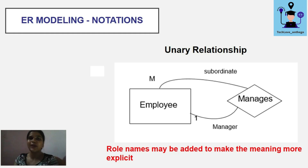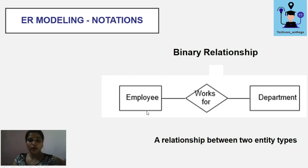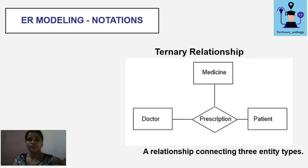Binary relationships are those in which two entity sets are participating. For example, employee and department — where 'employee works for department.' Two entities are participating, making it a binary relationship.